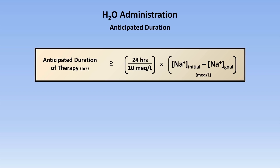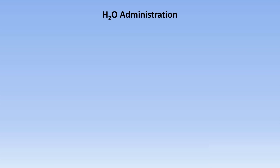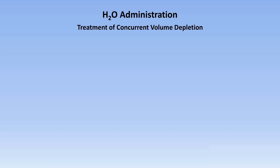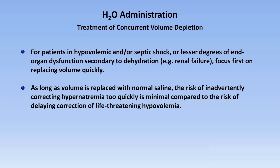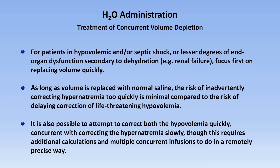We still have yet to discuss the trickiest situation with IV fluid administration — what to do when hypernatremia and severe volume depletion coexist. For hypernatremia, we want to correct at a relatively slow pace to prevent cerebral edema, but for severe hypovolemia we want to correct the volume deficit very quickly. For patients in hypovolemic and/or septic shock, or lesser degrees of end-organ dysfunction secondary to dehydration, focus first on replacing volume quickly. As long as volume is replaced with normal saline, the risk of inadvertently correcting the hypernatremia too quickly is minimal compared to the risk of delaying correction of life-threatening hypovolemia. It's also possible to attempt to correct both the hypovolemia quickly and the hypernatremia slowly concurrently, though this requires additional calculations and multiple concurrent infusions.